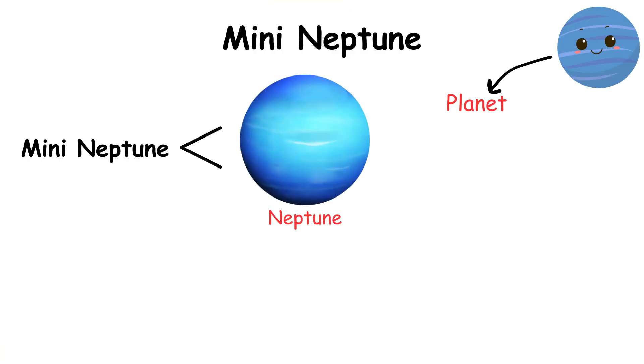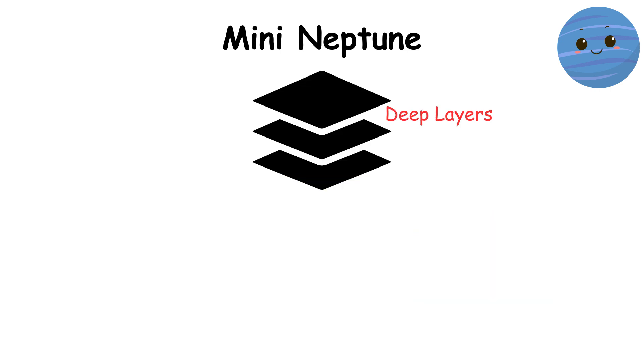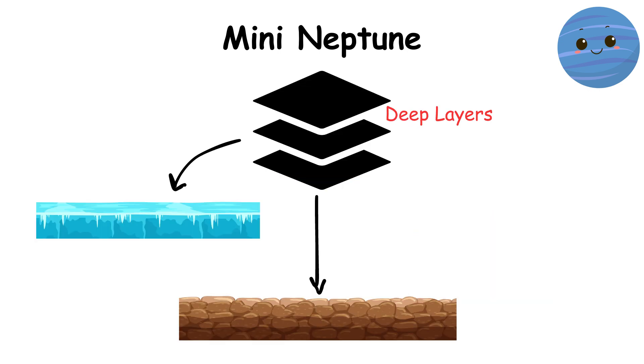A mini-Neptune is a planet less massive than Neptune but resembling Neptune. It has a thick hydrogen-helium atmosphere, probably with deep layers of ice, rock, or liquid oceans.